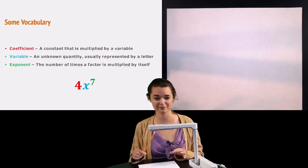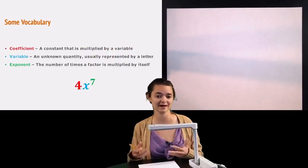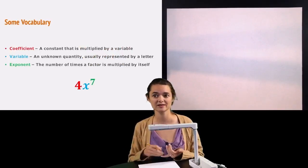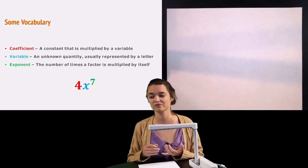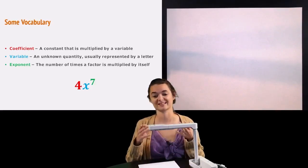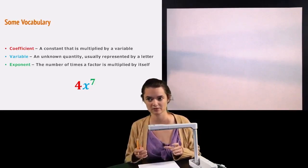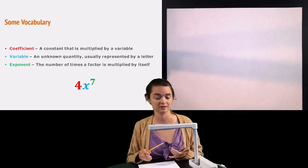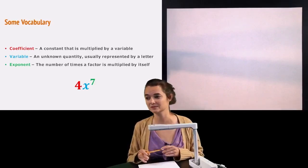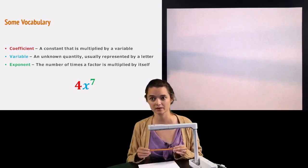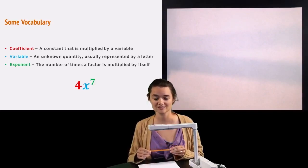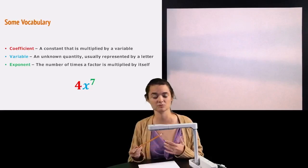So a little bit of vocabulary so that we're all talking the same math language. When I talk about a coefficient, a coefficient is a number, a constant that's multiplied by a variable, so it's the big number out front inside of the term. A variable is an unknown quantity, it's usually represented by some sort of a letter like x or y, and an exponent is the little tiny number which tells me how many times that factor is multiplied by itself.